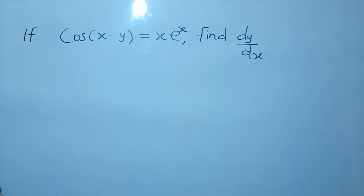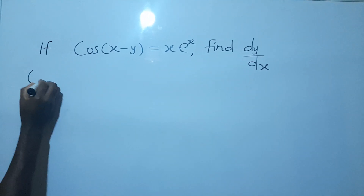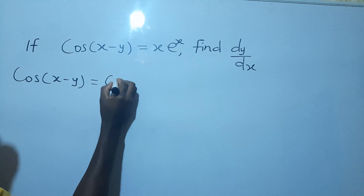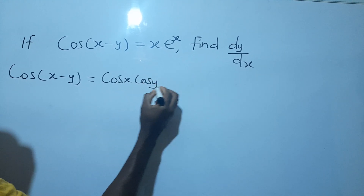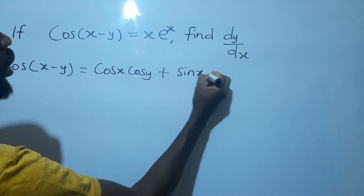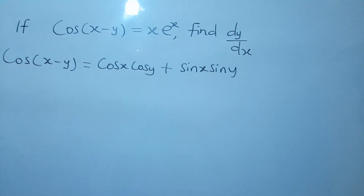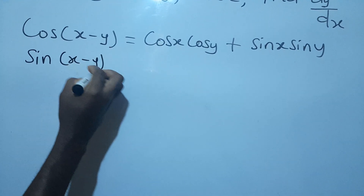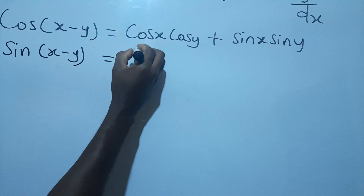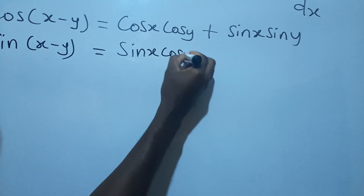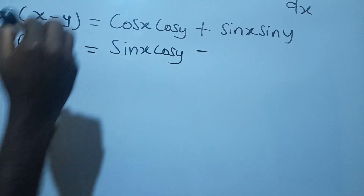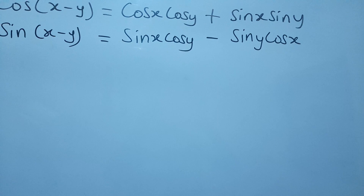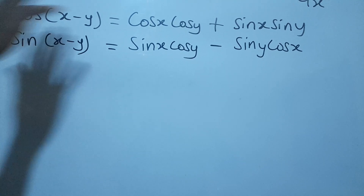Remember compound angle identities: if we have cos(x minus y), its expansion will be equal to cos x·cos y plus sin x·sin y. Also, if we have sin(x minus y), its expansion will be equal to sin x·cos y minus sin y·cos x. These two compound angle identities will help us solve this problem.